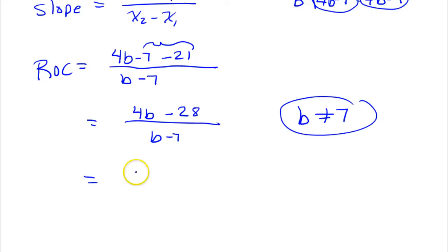But keeping that in mind, we've got a common factor up here. There's a gcf of 4. So I could pull out this common factor of 4. And that's going to leave behind b minus 7, if I factored out the 4, over b minus 7.